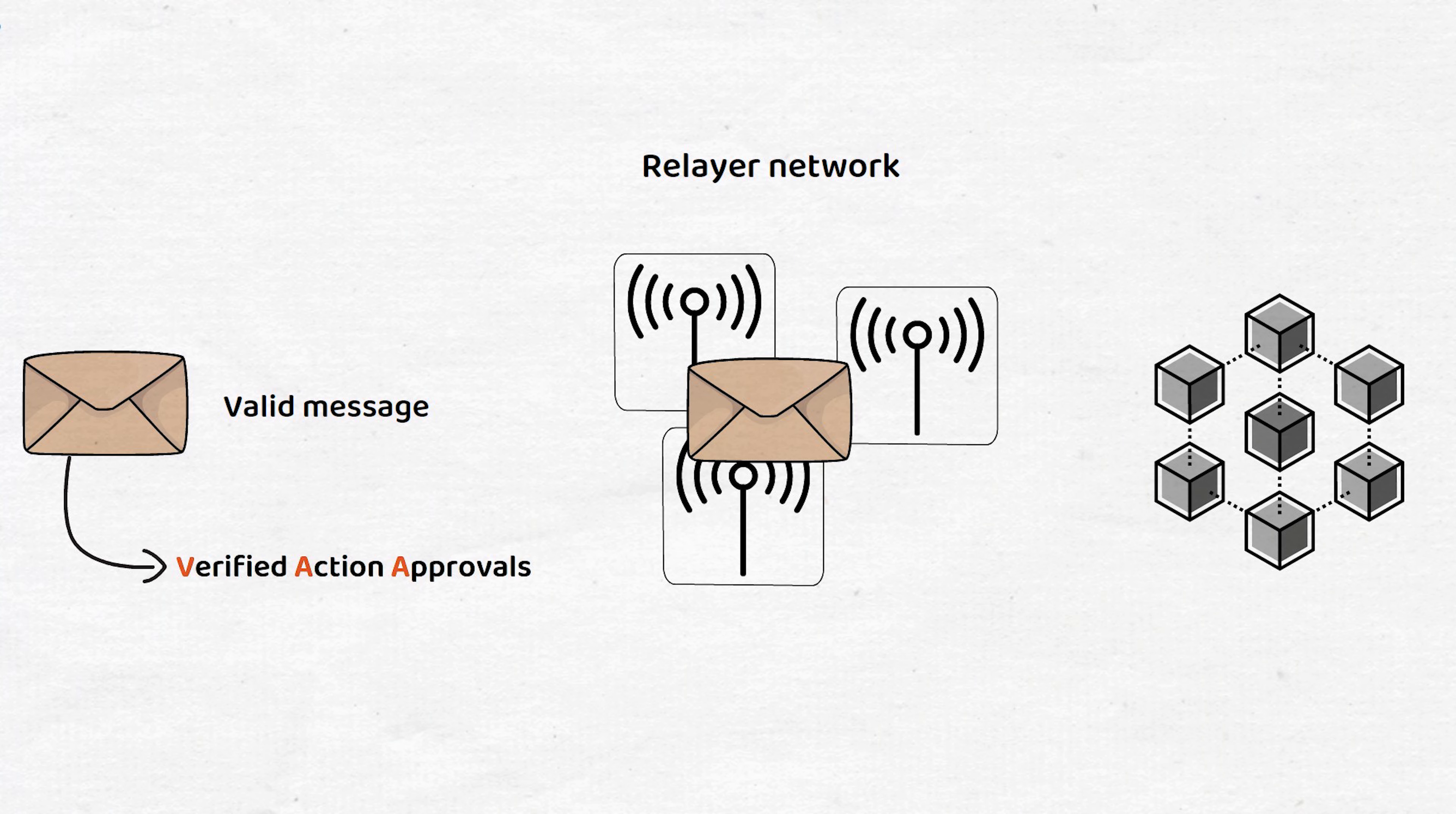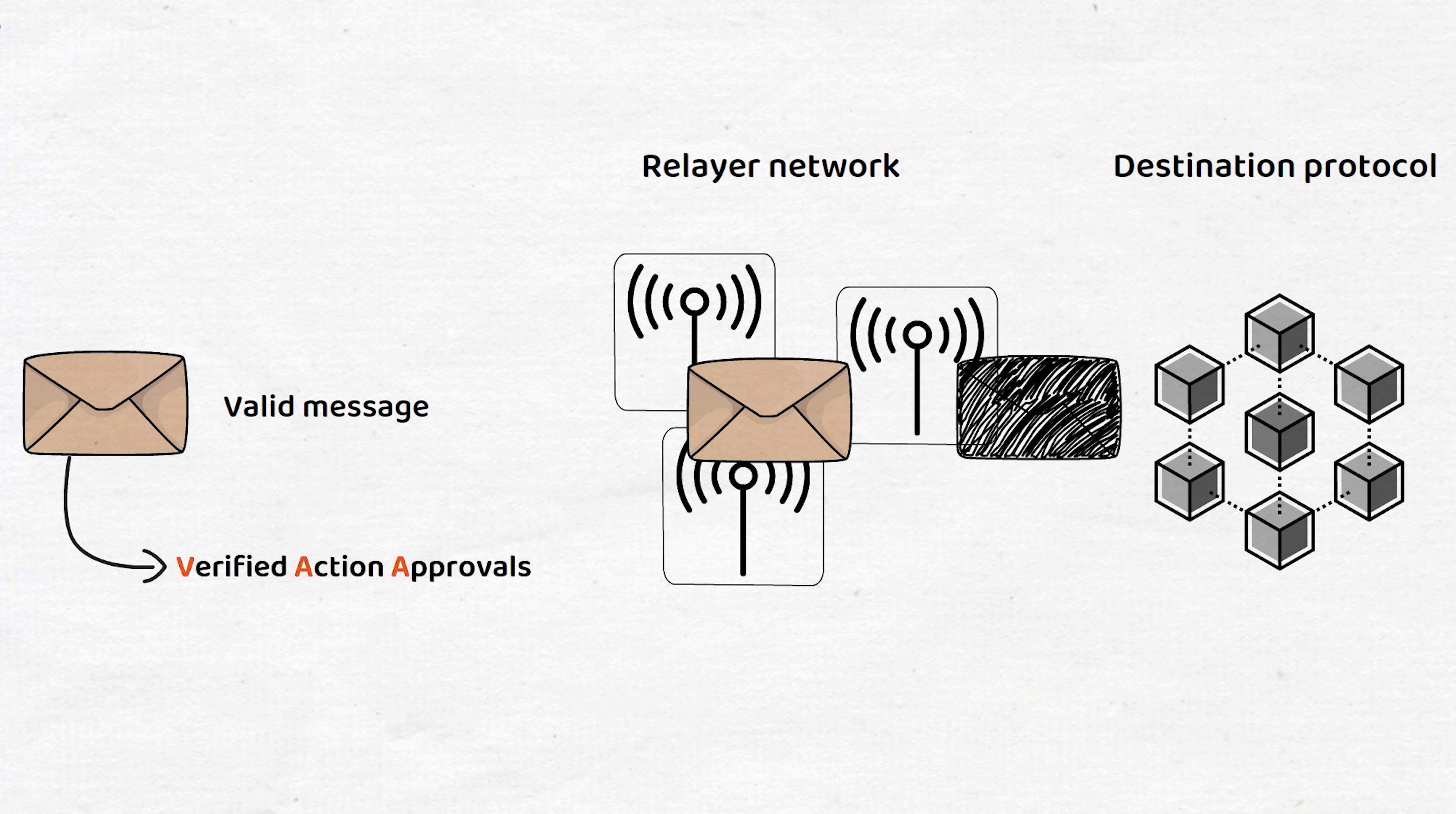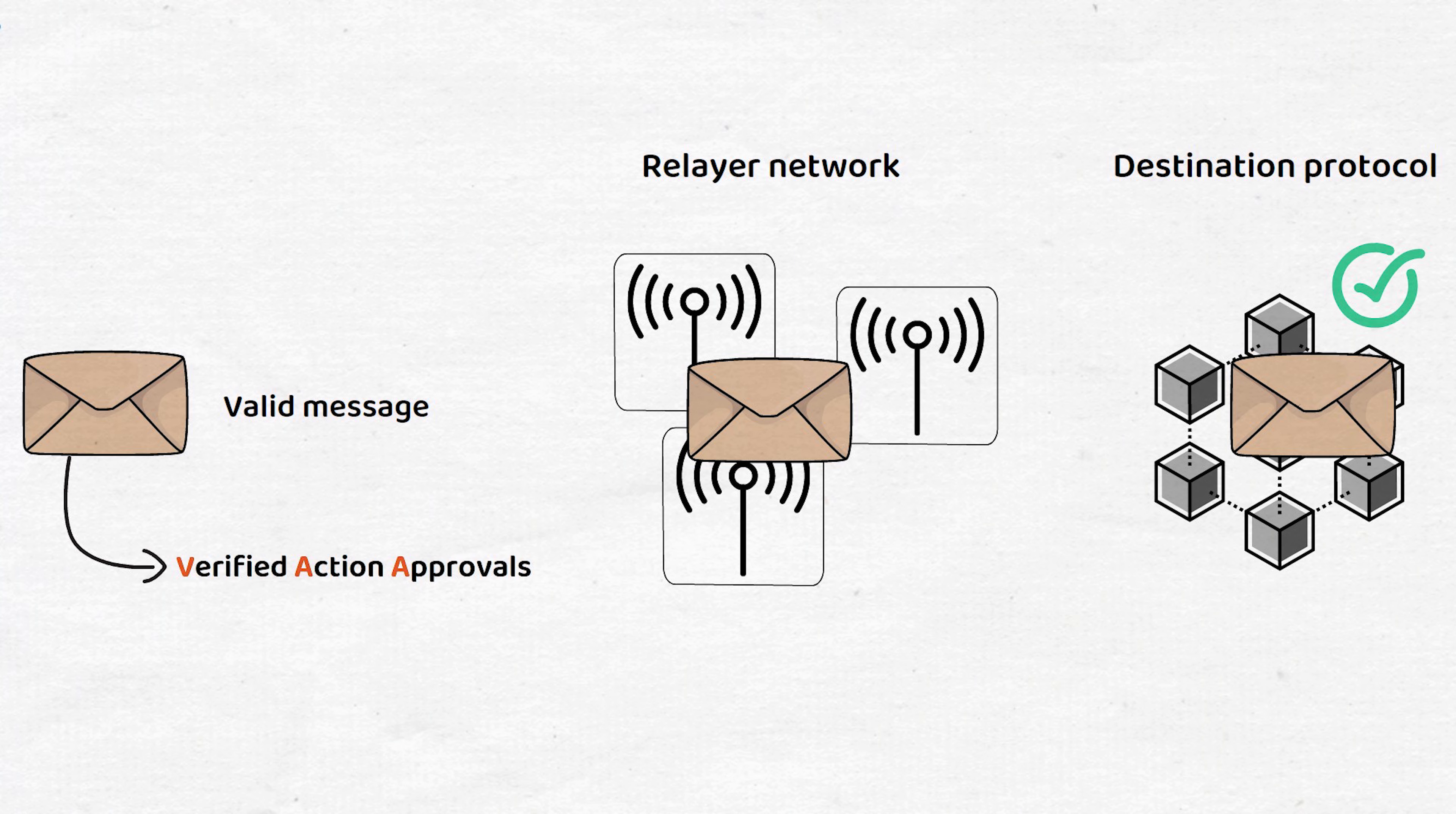To ensure security, relayers are unable to modify the VAA. Then, once the VAA is delivered, the destination protocol authenticates the signatures on the message to verify its legitimacy, which completes the transfer.